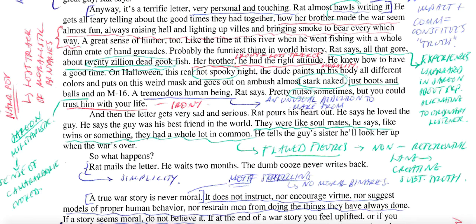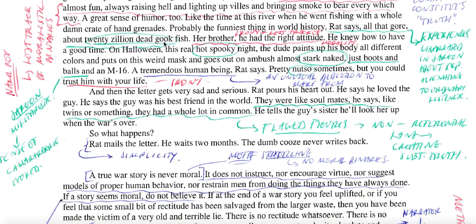This is an unorthodox handling of narrative perspective. 'Probably the funniest thing in world history,' Rat says, 'all that gore, about 20 zillion dead gook fish.' The experiences are narrated in jargon about the alienating experiences of being a soldier, and the distance that creates between the war experience and the ordinary citizen reading it. We have a hard time working out how blowing up a river full of fish with a case of hand grenades is the funniest thing in world history, rendered in this offensive, childish language.